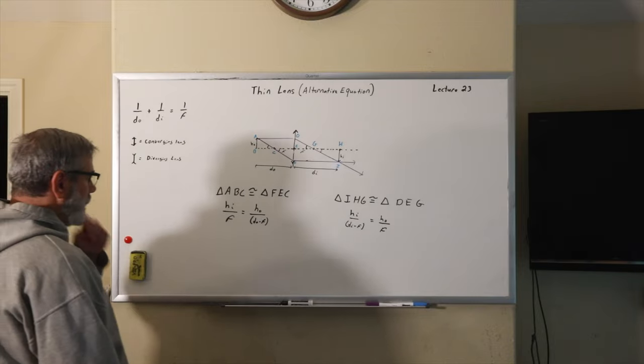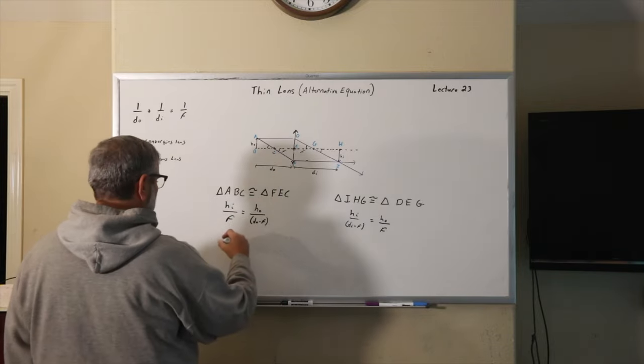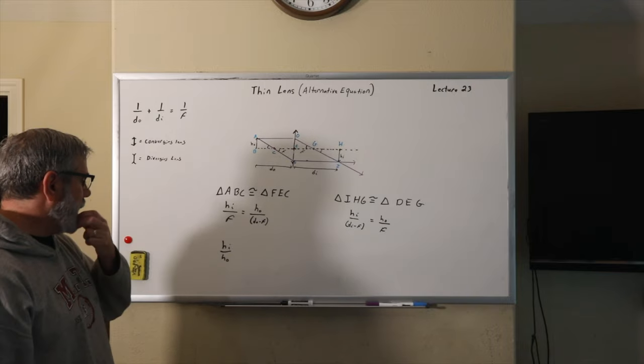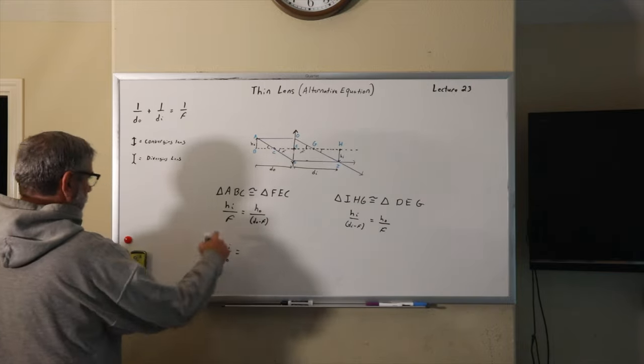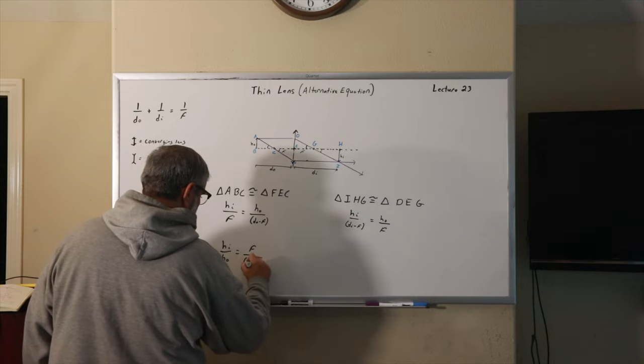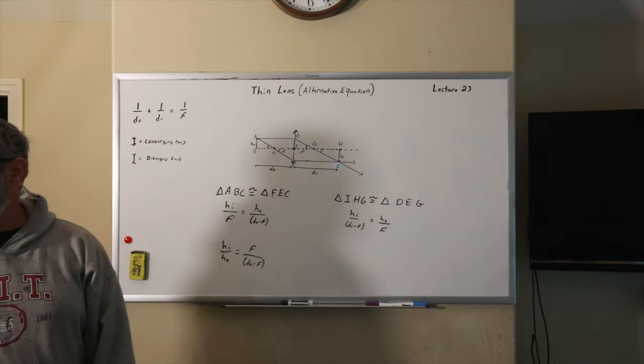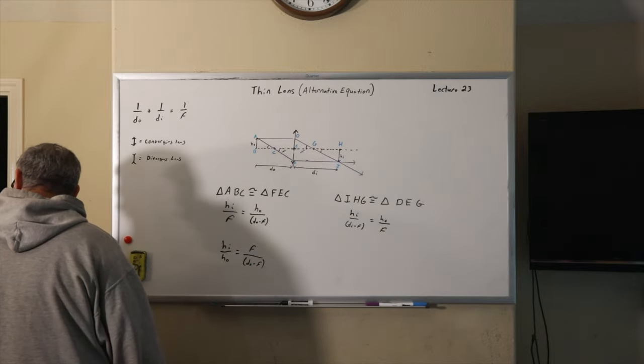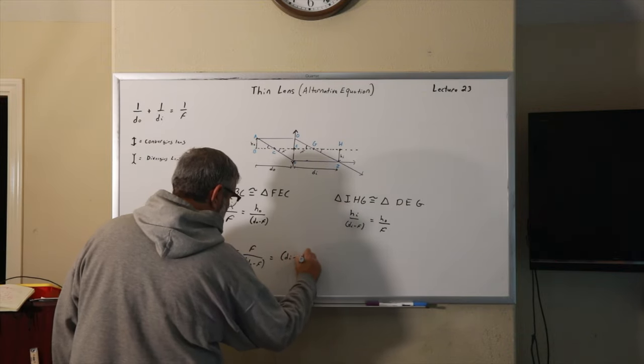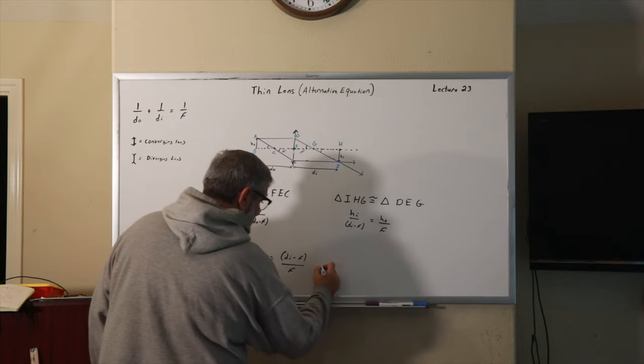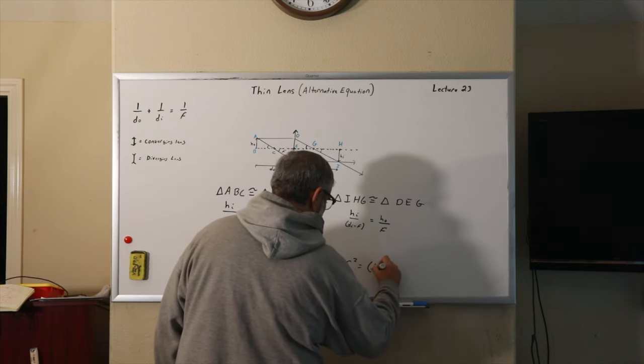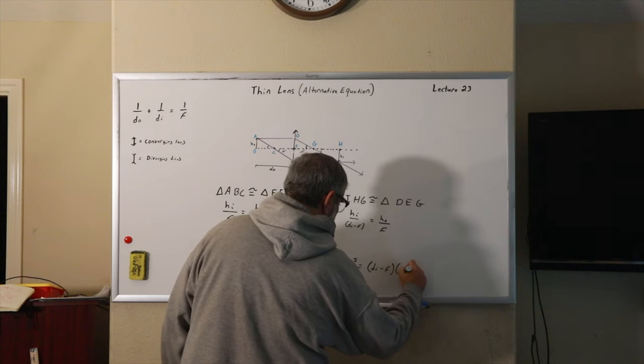So like before, let's solve this in terms of H sub I over HO, the height of the image divided by the height of the object. And if I do that, I'm going to get F over D-naught minus F, which will also be equal to D sub I minus F over F. And this gives us that F squared is equal to D sub I minus F times D sub O minus F.